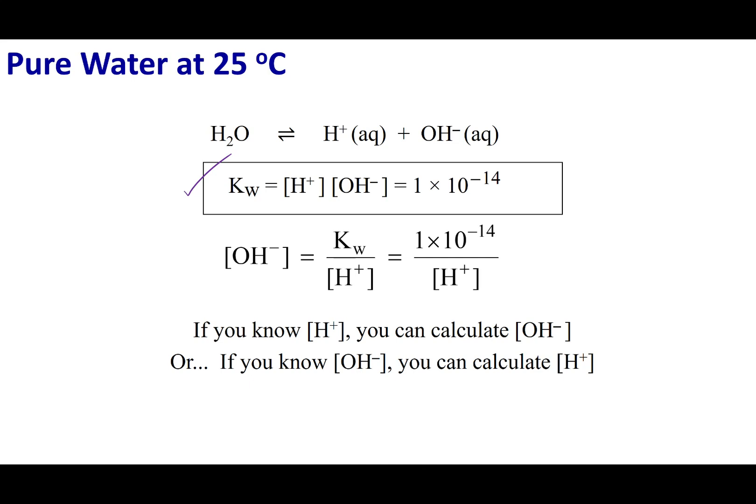So I can start with this equation and manipulate it around. What I can say is that KW equals H plus concentration times OH minus concentration. I can divide both sides by H plus concentration, and I get this expression that the OH concentration is going to be KW divided by H plus.